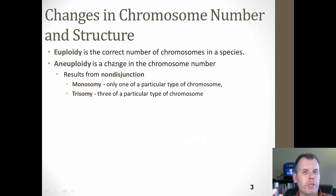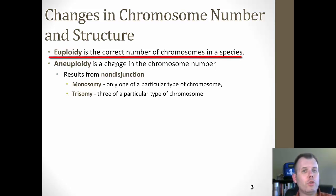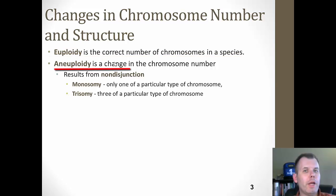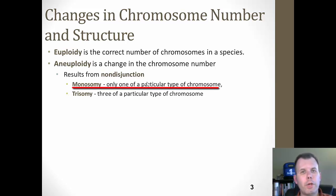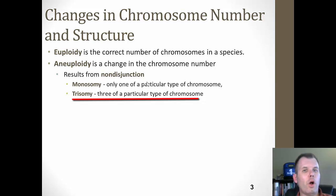Most people have the normal number of chromosomes, which is 46 — we have 23 pairs. When you have the normal number, you're called euploid, meaning you have the true number of chromosomes. However, if you have too many or too few, you're known as aneuploid. This results from a process called non-disjunction. You can have monosomy, in which you have one chromosome instead of a pair, or trisomy, in which you have three chromosomes as opposed to two. So you either get one more or one less than what is expected.